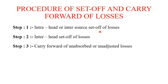Intra-head means within the same head of income. For example, if you have three house properties A, B, and C — loss in house property A, income in house property B, income in house property C — the loss of house property A can be adjusted against income of B or C. All three come under income from house property, which is the same head but different sources. Adjusting loss between sources within the same head is called intra-head adjustment or inter-source adjustment.